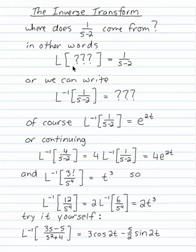In other words, what should I take the transform of to get 1 over s minus 2? Or you could write it this way: inverse Laplace transform of 1 over s minus 2 equals what? Well, we know that e to the 2t is transformed 1 over s minus 2. So the inverse Laplace transform of 1 over s minus 2 is e to the 2t.